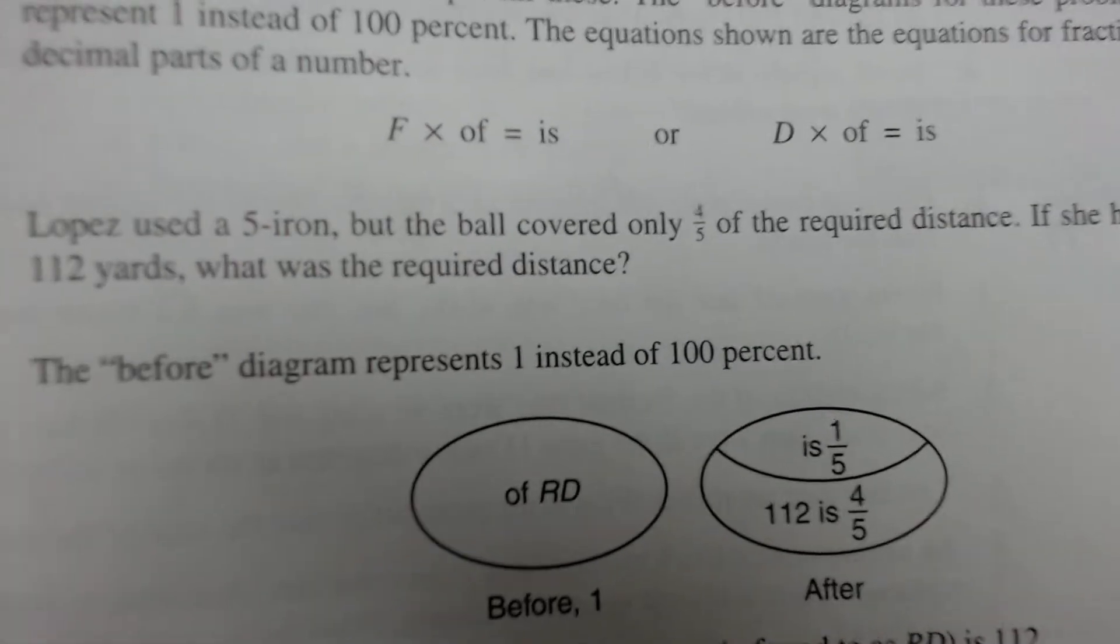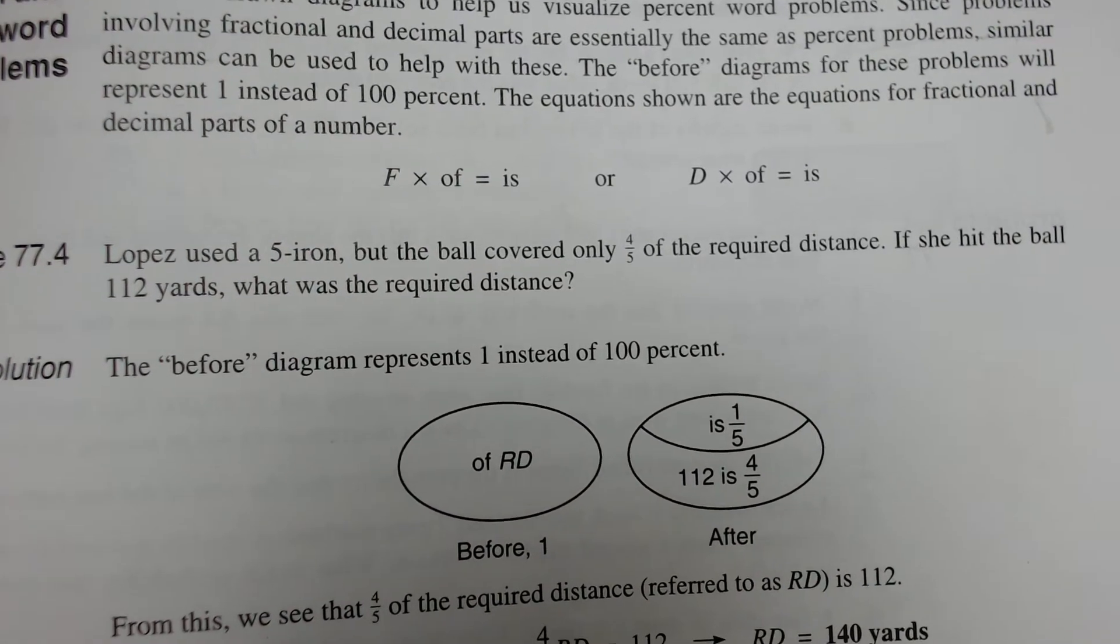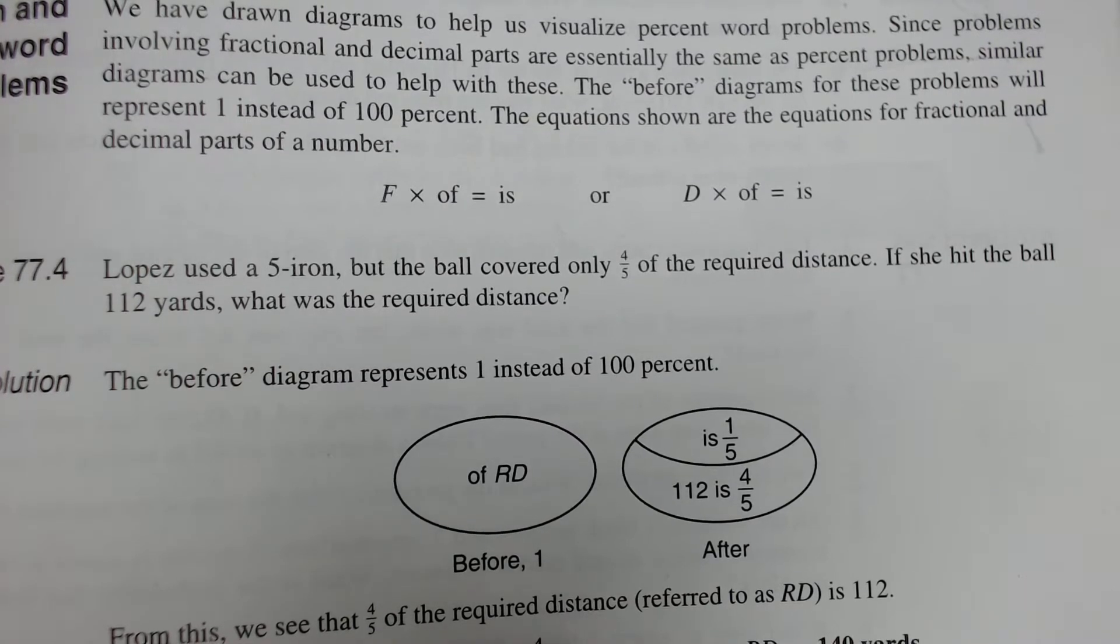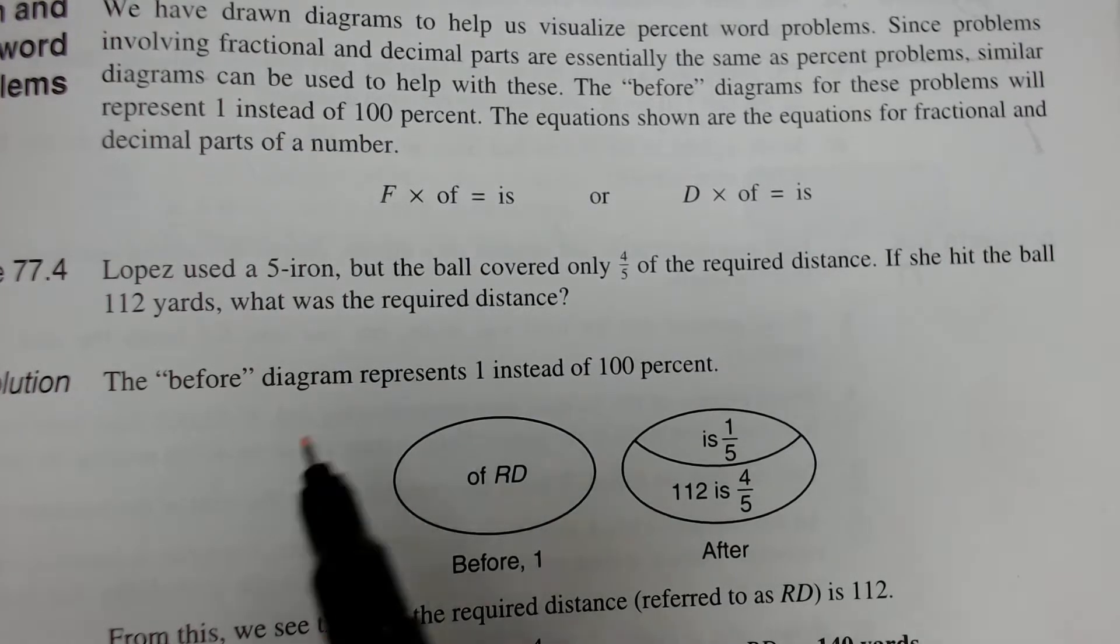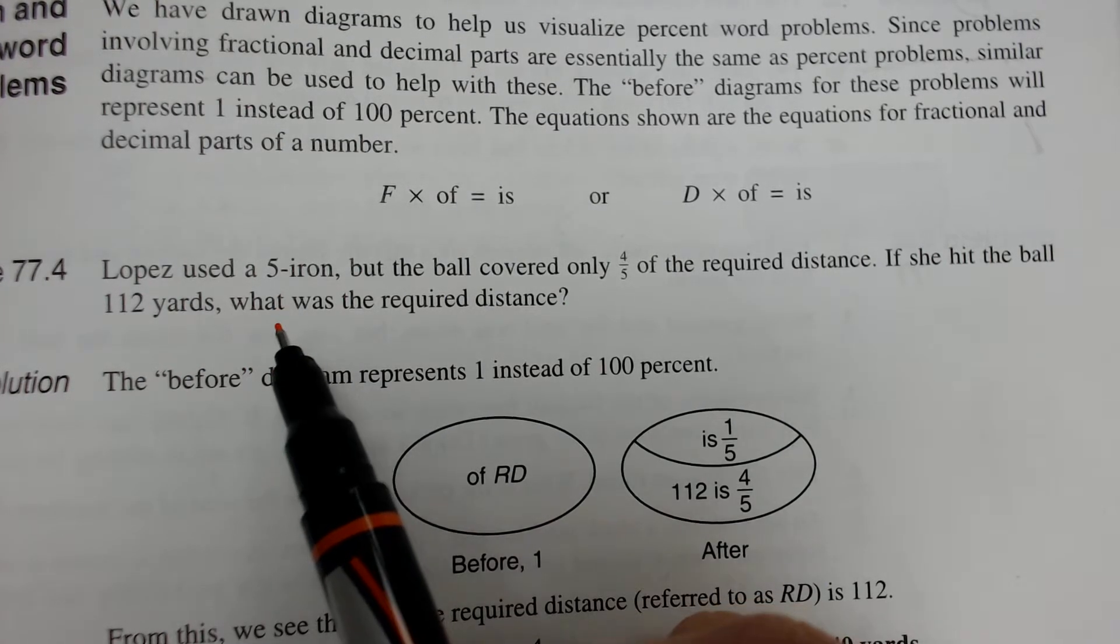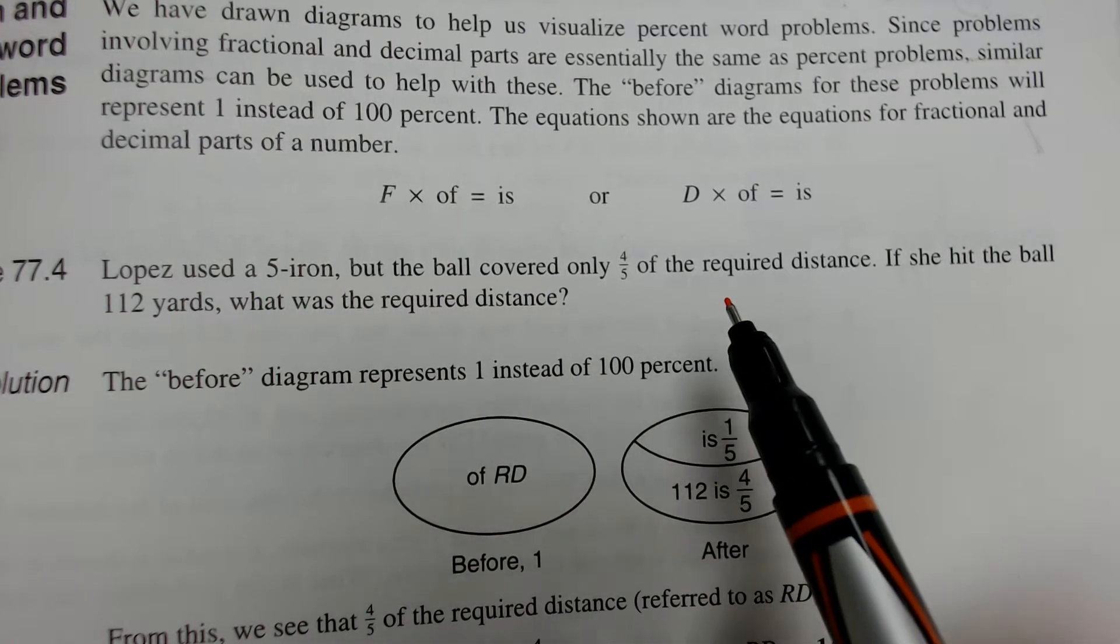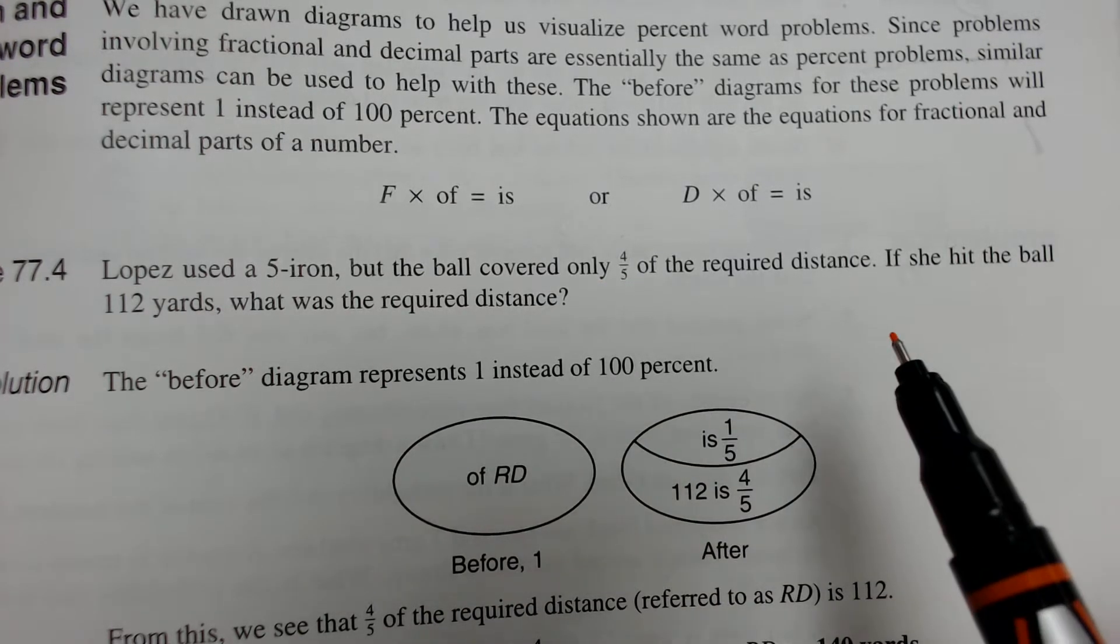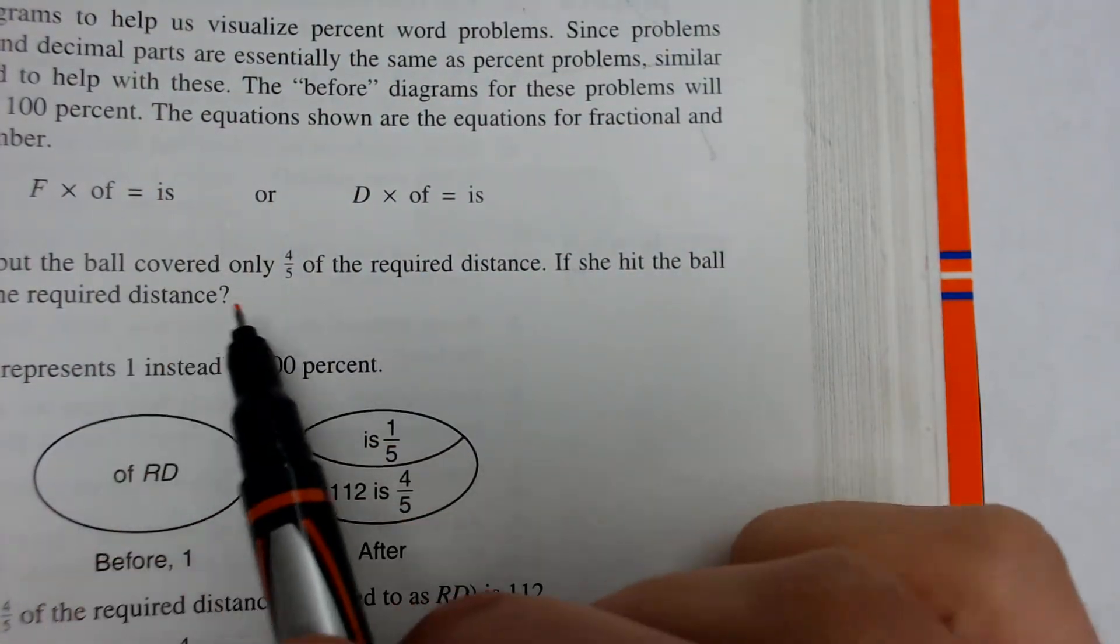Let's go ahead and dive right in. They tell me that Lopez used a 5 iron, but the ball covered only 4 fifths of the required distance. If she hit the ball 112 yards, what is the required distance? So, this 5 iron, useless information, it's kind of like a trick. We don't care what kind of iron she used. We just want to know how much of the distance that she covered and then how far that was. So, she covered 4 fifths of the required distance. 4 fifths times x. Required distance being the unknown.